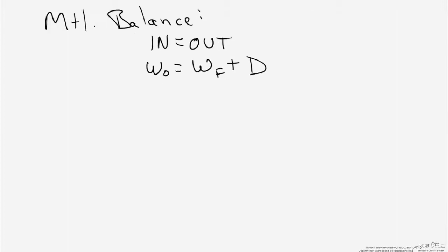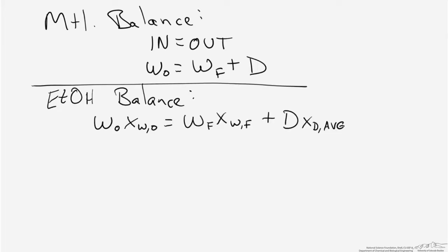We balance the number of moles of liquid initially charged into the reboiler with what remains in the reboiler at the end, plus the number of moles that emerge from the column as distillate. That gives us the total mole balance. We also do a component balance on ethanol: moles initially charged times initial composition equals moles remaining in the reboiler times their composition, plus moles of distillate times the constant distillate composition from the problem statement.